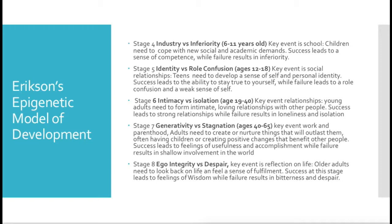Stage seven is Generativity versus Stagnation, from ages 40 to 65. The key events are work and parenthood. Adults are trying to create or nurture things that will outlast them — essentially trying to leave a legacy. This can be through having children, creating positive changes in the world, funding a charity, or creating something that changes the world. Success leads to feelings of usefulness and accomplishment, while failure results in shallow involvement in the world.